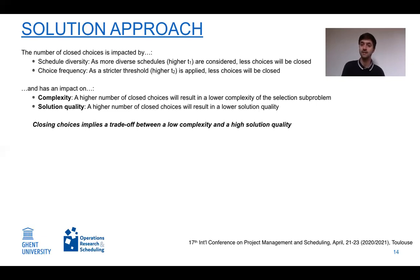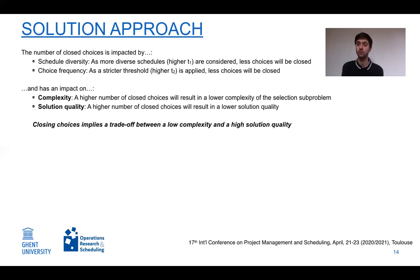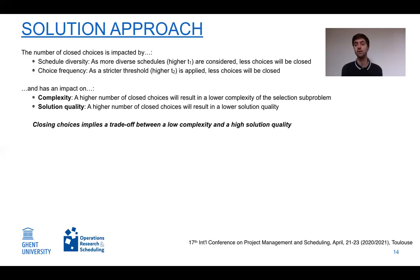To illustrate: when we fix an alternative, either it was the best one — in which case there is no quality impact — or we incorrectly fixed a suboptimal alternative, which negatively impacts solution quality. In other words, closing choices is a trade-off between reducing problem complexity and hopefully retaining a sufficiently high solution quality.